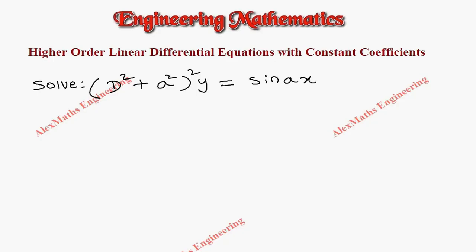Hi students, this is Alex here. In this video we are going to solve a problem. The equation is (D² + a²)² y = sin(ax). Now writing the auxiliary equation is: